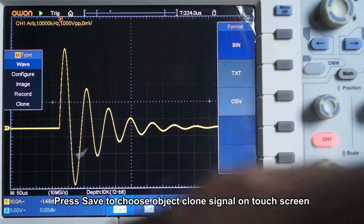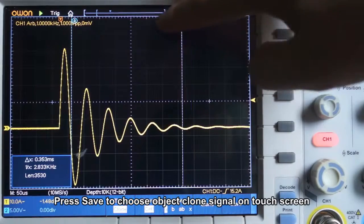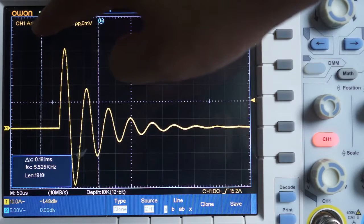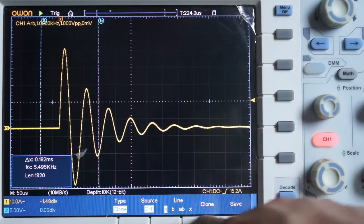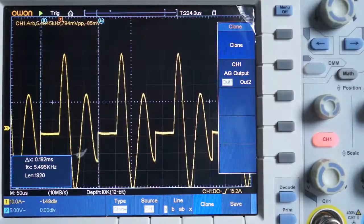Press Save button to choose the object clone signal on touchscreen. Select the output channel. Then, we can observe that waveform has been cloned to the relevant channel.